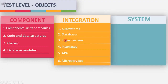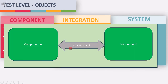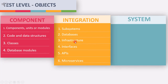Next is infrastructure. Here, integration testing refers to both component integration and system integration. For system integration testing, the minimum requirement is two subsystems and a communication protocol between them. Therefore, infrastructure and interface are test objects of integration testing.